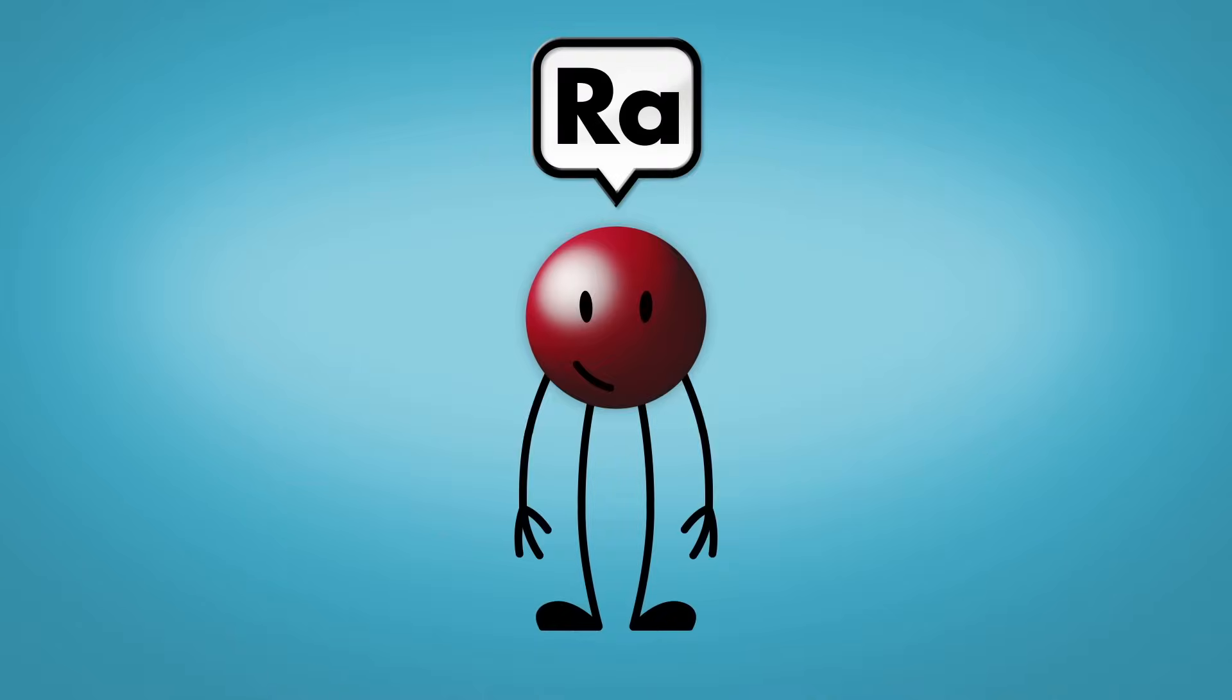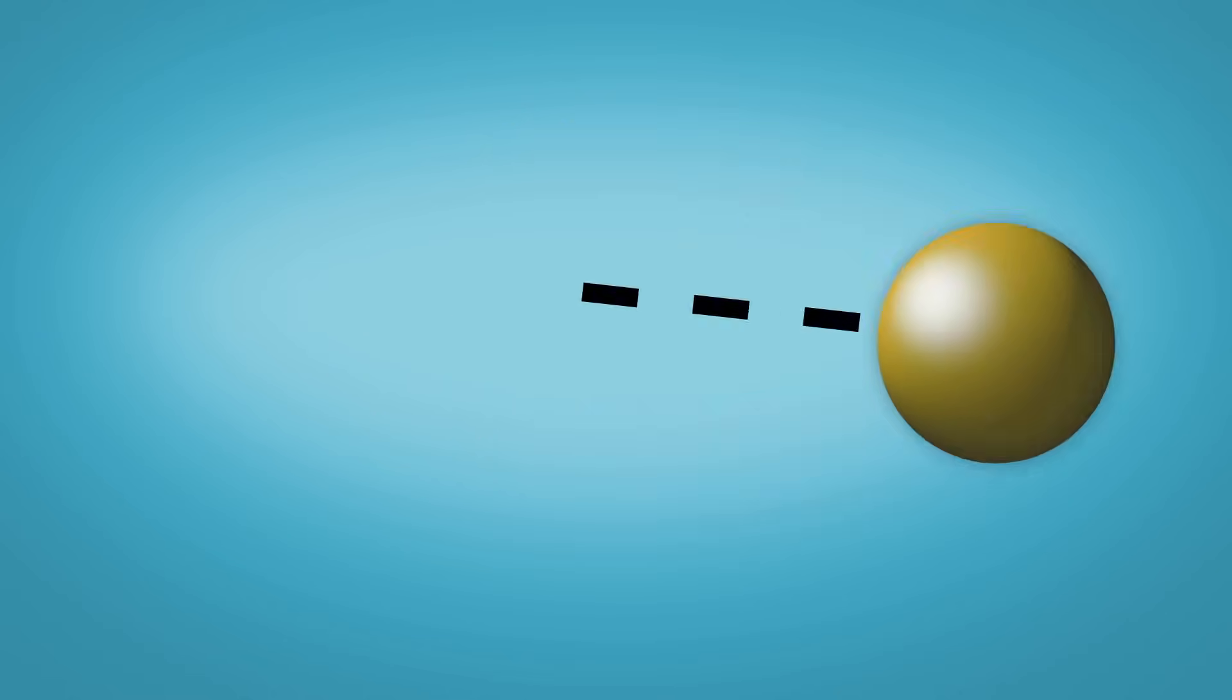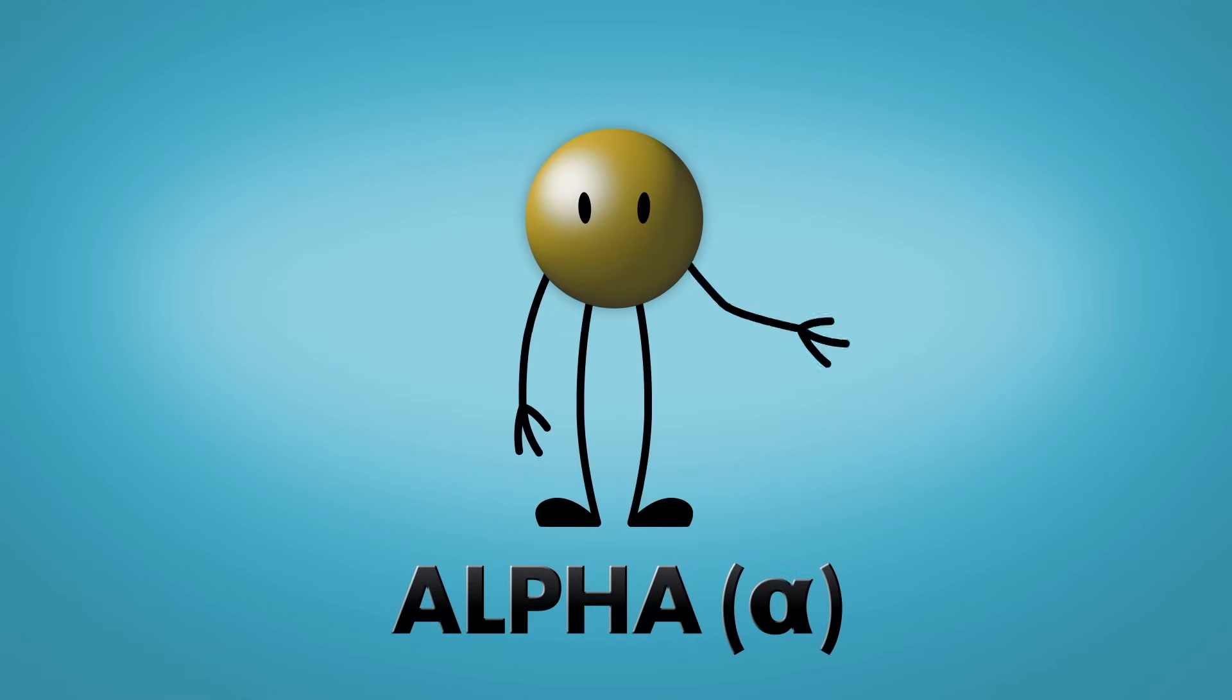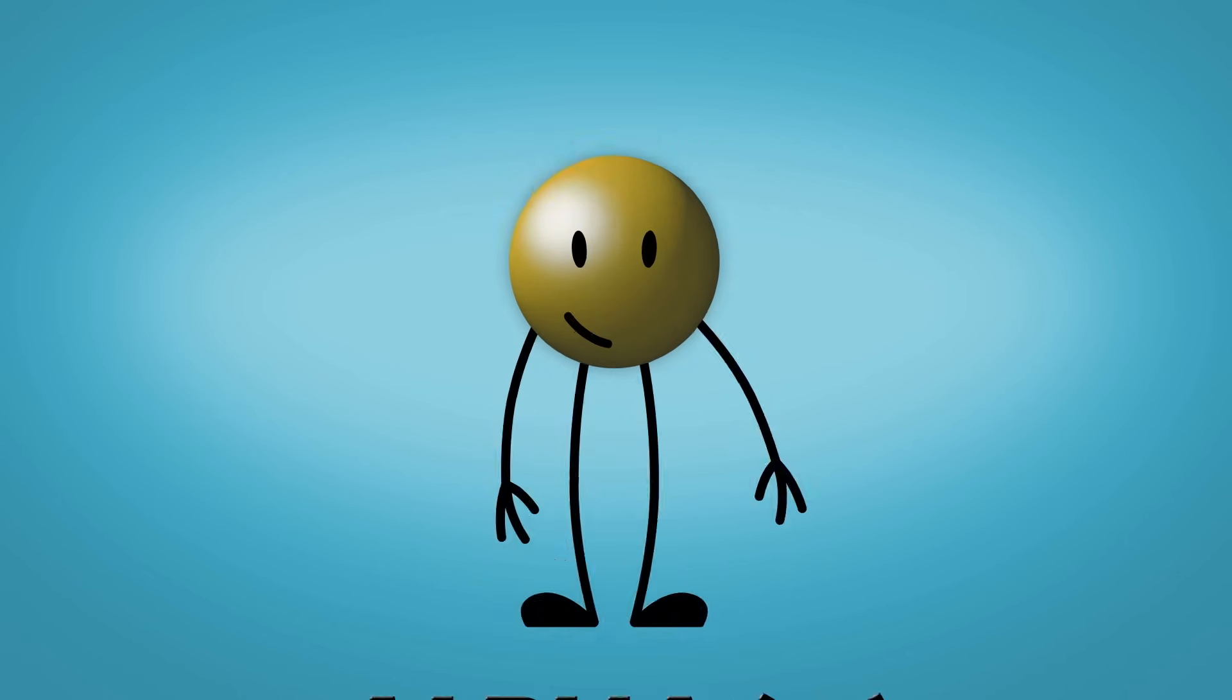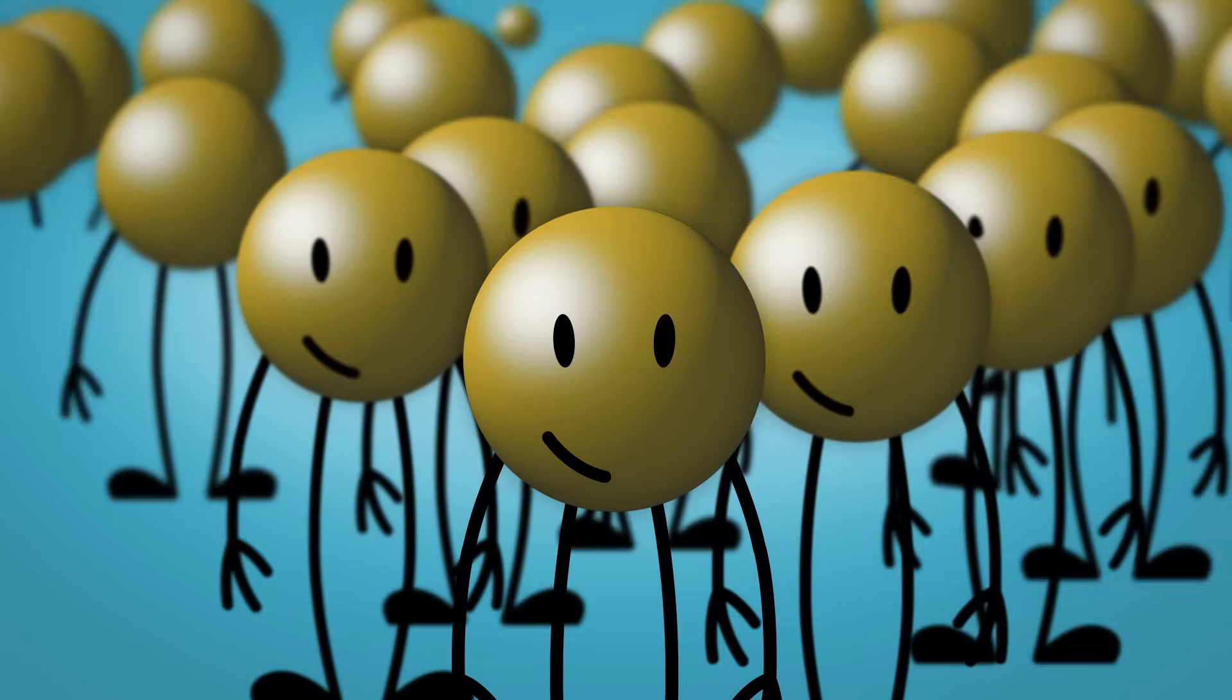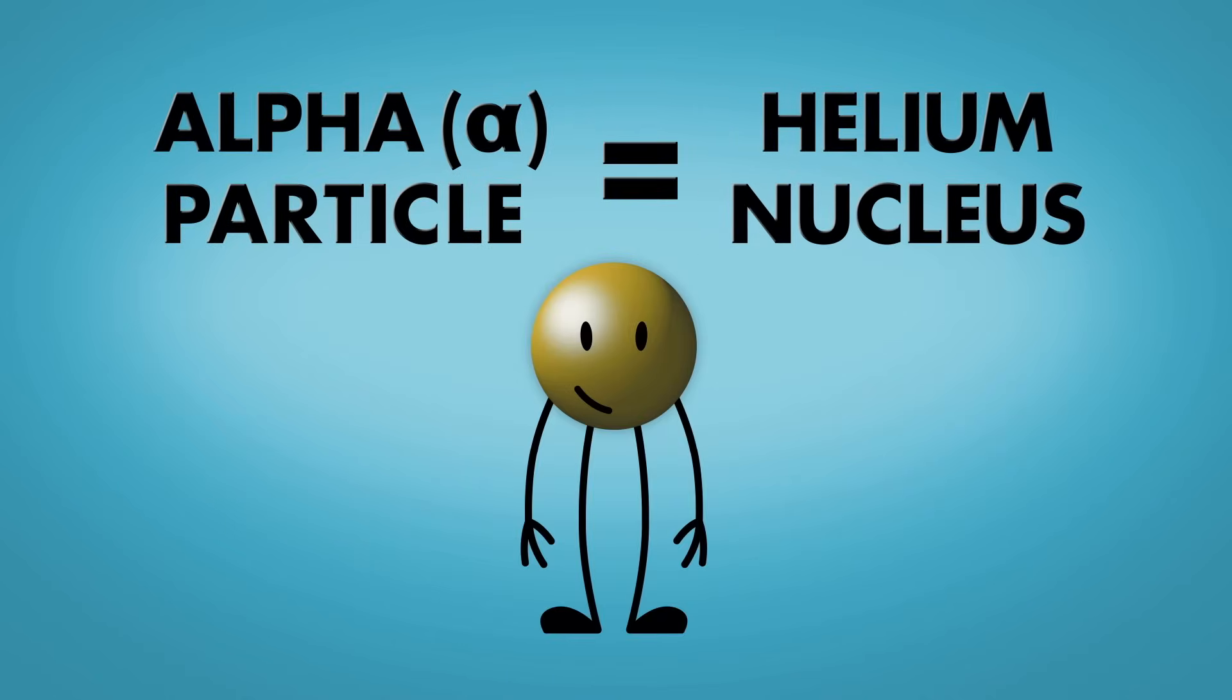The other particle that emits spontaneously from an unstable nucleus is alpha. An alpha particle is 8,000 times more massive than beta, and it's a bit slower. Alpha is made from two protons and two neutrons. If we trap a lot of alpha particles together, we get helium gas. Alpha is a helium nucleus.